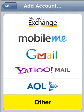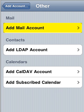You will see a list of common email providers. You will need to select Other as the option. Now select Add Mail Account.